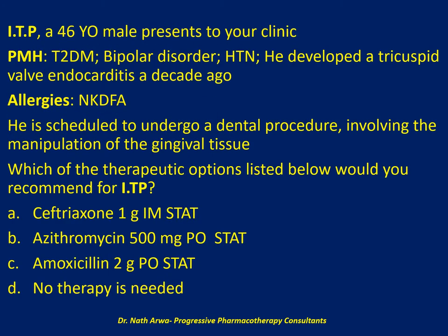The next question reads: Mr. ITP, a 46-year-old male patient, presents to your clinic with a past medical history of type 2 diabetes mellitus, bipolar disorder, and hypertension. He developed tricuspid valve endocarditis a decade ago. He has no known drug or food allergies and is scheduled to undergo a dental procedure involving manipulation of the gingival tissue. Which therapeutic option would you recommend? Ceftriaxone 1g IM stat, azithromycin 500mg orally stat, amoxicillin 2g orally stat, or no therapy needed?